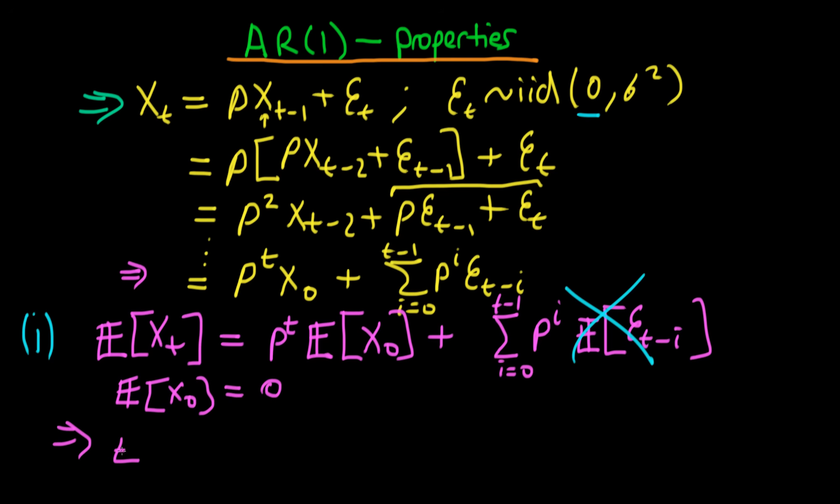Because then that implies that the expectation of Xt is equal to 0 as well, so we have that the expectation of Xt is a constant. So that is the first condition under which an AR(1) process will be stationary in mean. We have to have that the expectation of the first term in the series is 0.